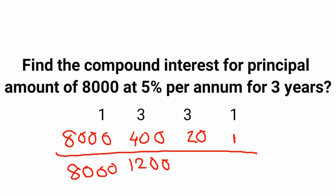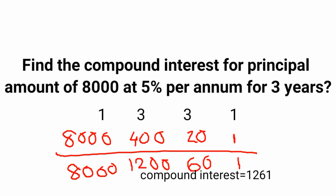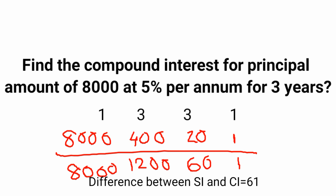Third column: 3 into 20 gives 60. Fourth column: 1 into 1 gives 1. To find the compound interest, leave the first column and add the rest: 1200 plus 60 plus 1 equals 1261. To find the difference between simple interest and compound interest, leave the first two columns and add the remaining: 60 plus 1 gives 61.